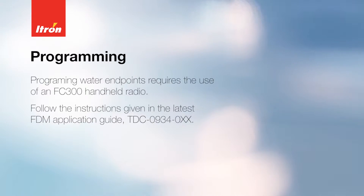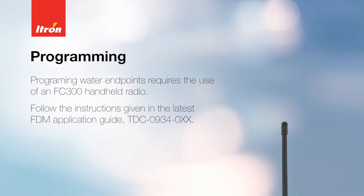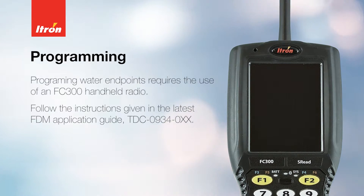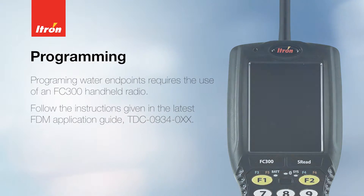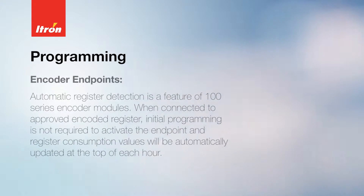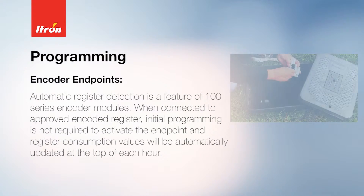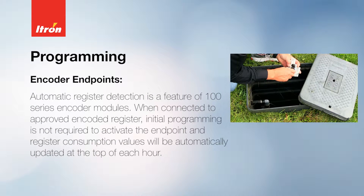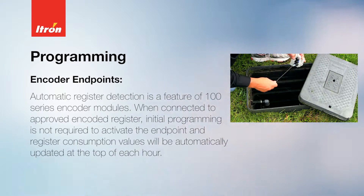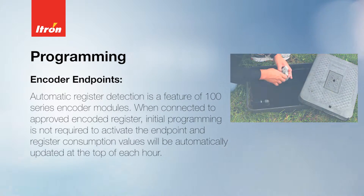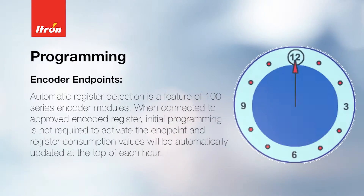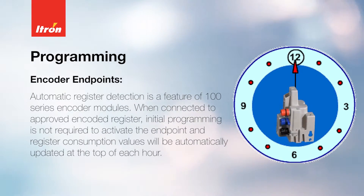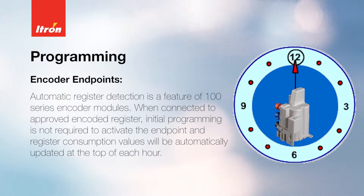Programming water endpoints requires the use of an FC 300 handheld radio. Follow the instructions given in the latest FDM application guide. Automatic register detection is a feature of the 100-series encoder modules when connected to approved encoded registers. Initial programming is not required to activate the endpoint, and register consumption values will be automatically updated at the top of each hour.